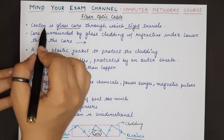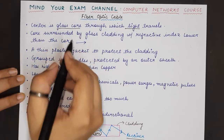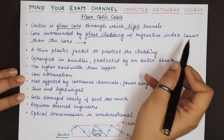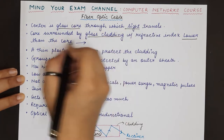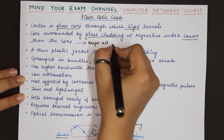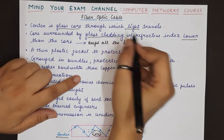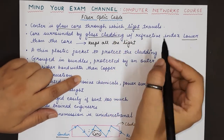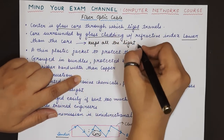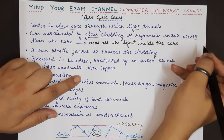The glass core is surrounded by a glass cladding. The glass cladding has a refractive index which is lower than the glass core, and this keeps the light inside the core. It is important to understand why the refractive index of the outer cladding is lower than the core — it is to keep all the light inside the core itself and to avoid any light from escaping outside.